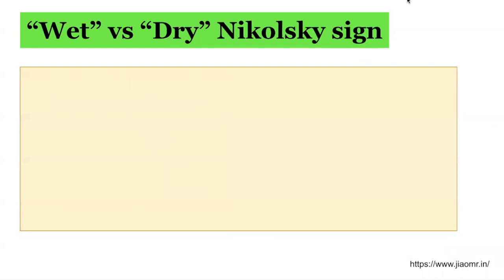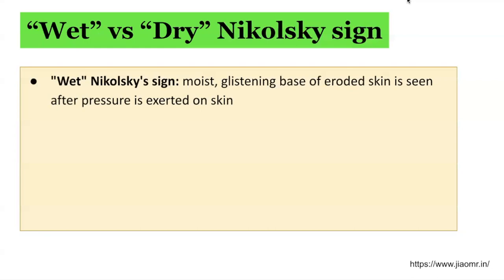What is the difference between wet versus dry Nikolsky sign? Wet Nikolsky sign is when, after eliciting a Nikolsky sign, the underlying base of the lesion is moist, glistening, and demonstrates eroded skin after pressure is exerted on the skin. This is usually indicative of an active state of pemphigus.